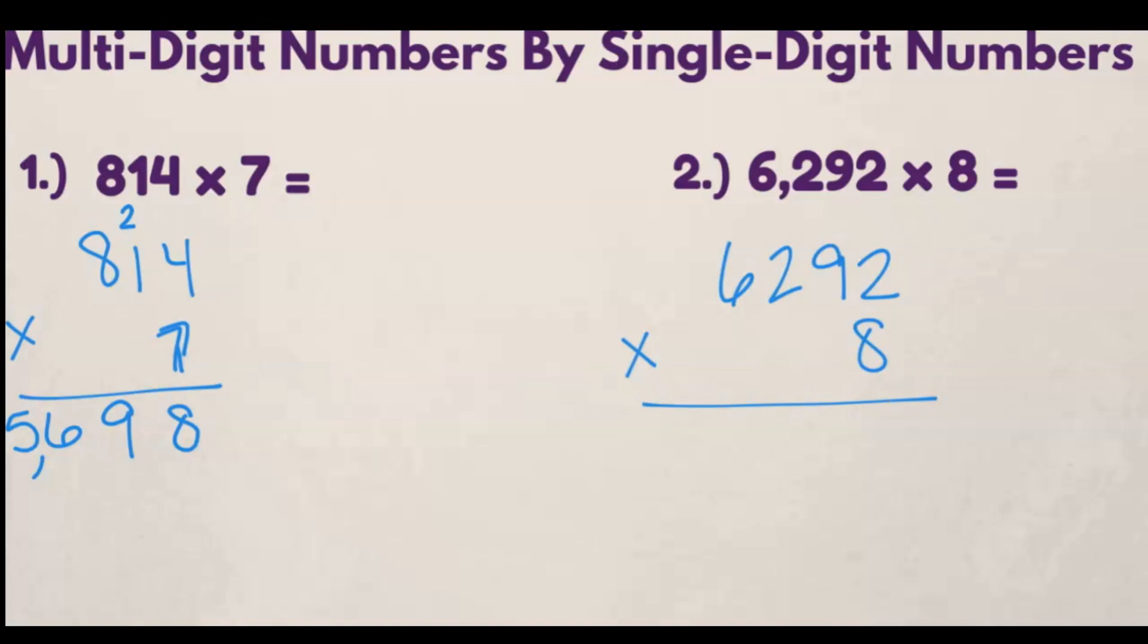We're going to follow the same process, starting with our ones digits. 2 times 8 is 16. We put the 6 down below and we carry the 1.